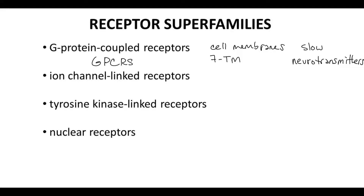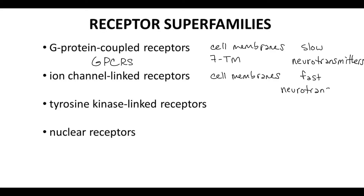The second superfamily is the ion channel-linked receptors. Ion channels are found in cell membranes. Ligand binding can open or close the ion channel. The flow of ions through a channel is very fast, and ligands that open ion channels are often called fast neurotransmitters.